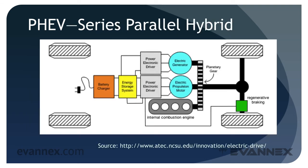The PHEV series-parallel architecture uses an internal combustion engine that can both drive the wheels of the car and also turn a generator to charge the battery. The key difference is that the ICE is involved in charging the battery by driving a generator and transmitting its power directly to the drive wheels through special gearing, shown in the middle right of the figure. Like the series arrangement, the battery, shown in yellow, is also charged from the grid using a battery charger. Power from the battery is passed through control electronics to an electric motor, and a regenerative braking component, shown in green, translates kinetic energy into electricity to recharge the battery.